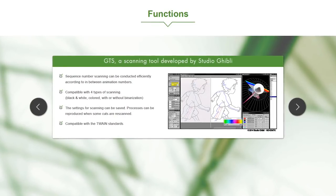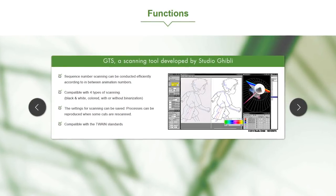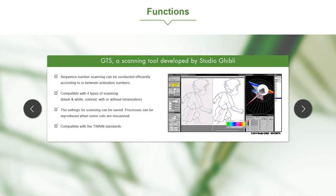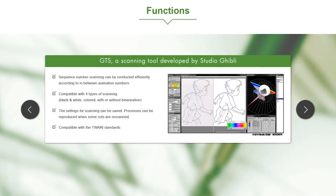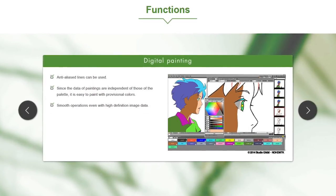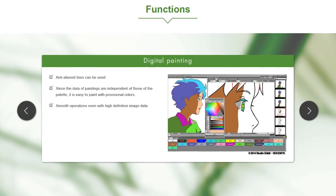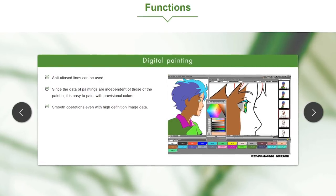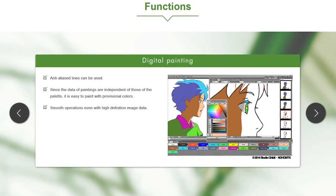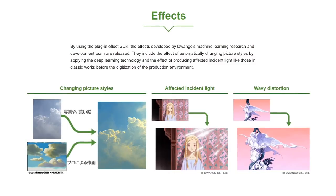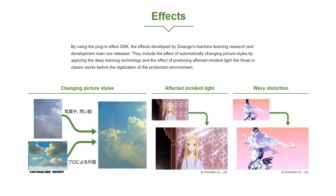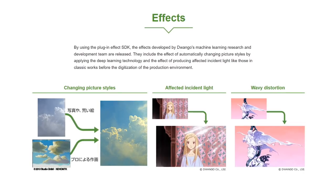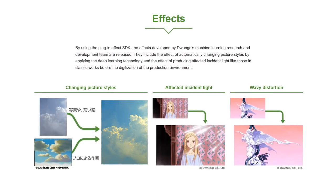Studio Ghibli even created a scanning tool for OpenToonz called GTS, which helps to smooth out lines that are not smooth to make digital painting easier. A ton of digital drawing tools are also included, with support for motion tracking to combine video footage with your animation, and it's compatible with both raster and vector images. Plugins can also be added to enhance the functionality, including their SDK, which allows anyone to manage effects in OpenToonz.